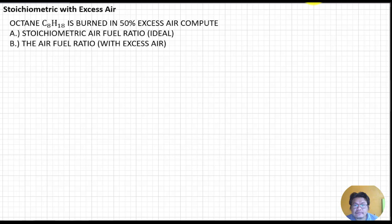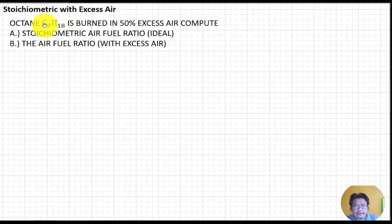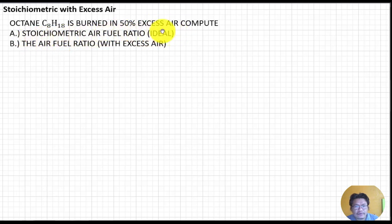We are going to calculate a combustion formula problem involving stoichiometric with excess air. The sample problem involves octane, C8H18, burned in 50 percent excess air. We need to compute: (a) the stoichiometric or ideal air-fuel ratio, and (b) the air-fuel ratio with excess air.